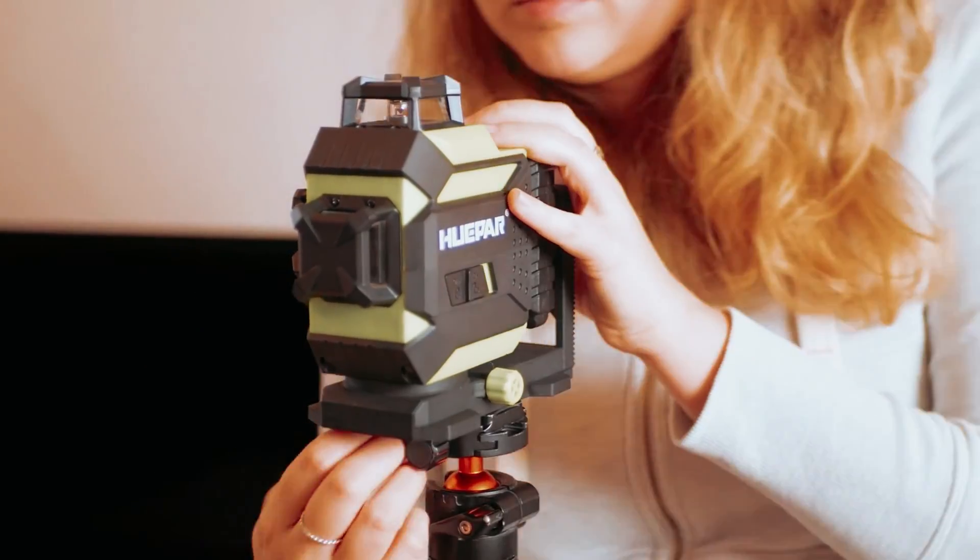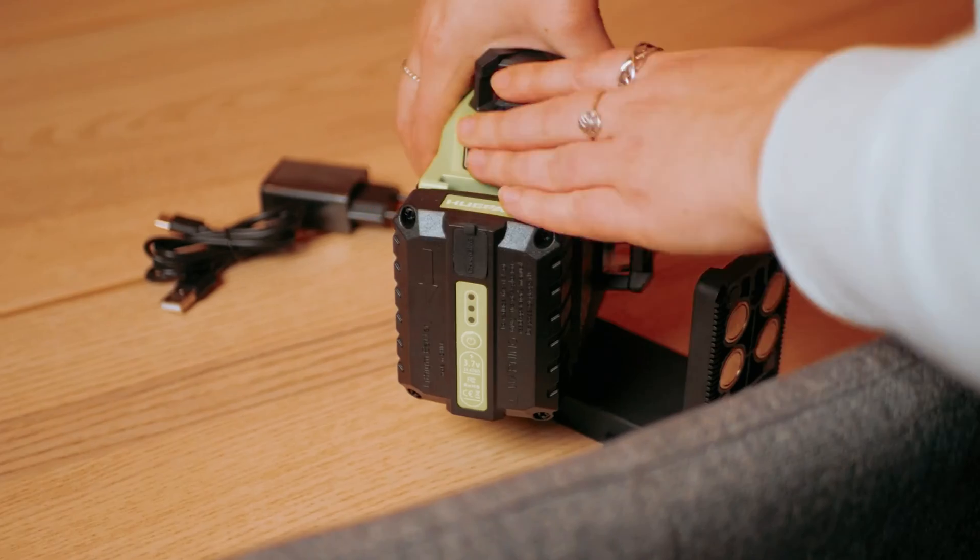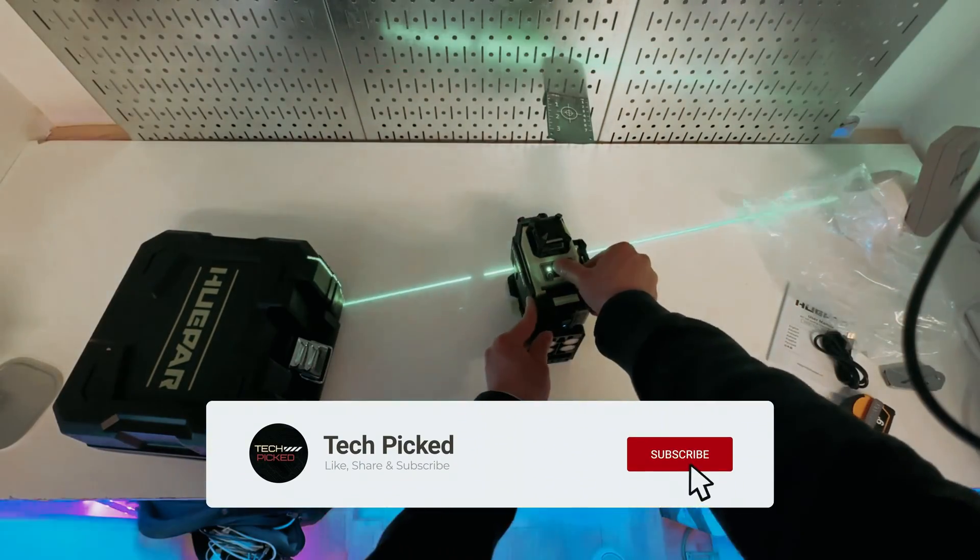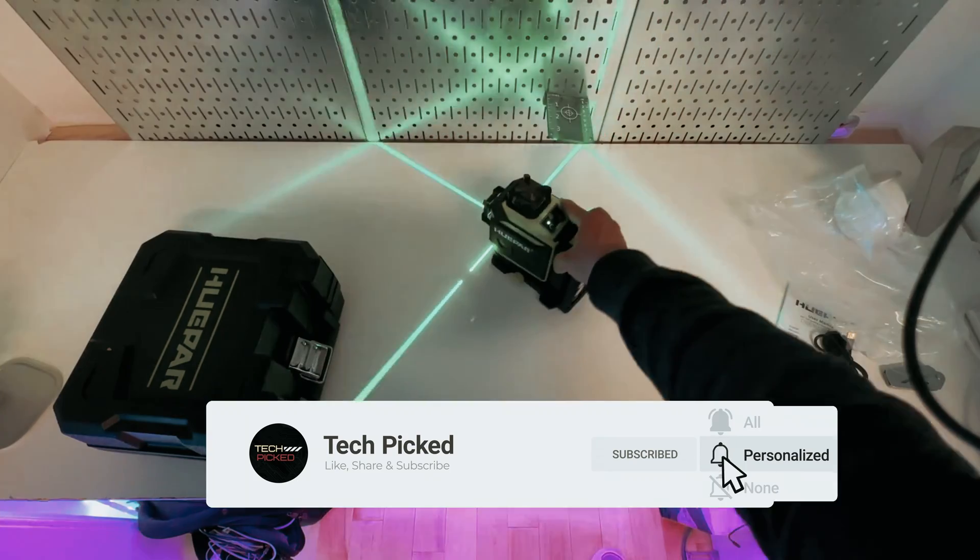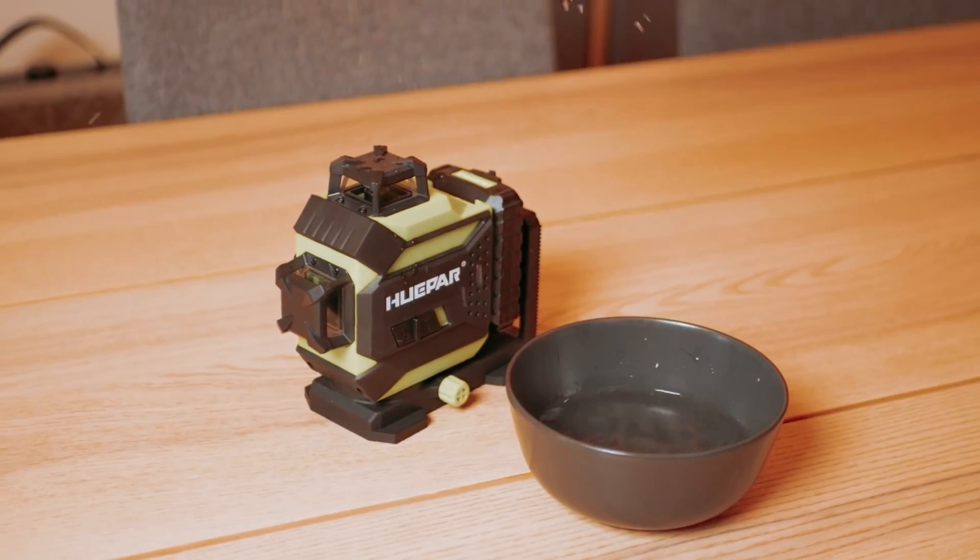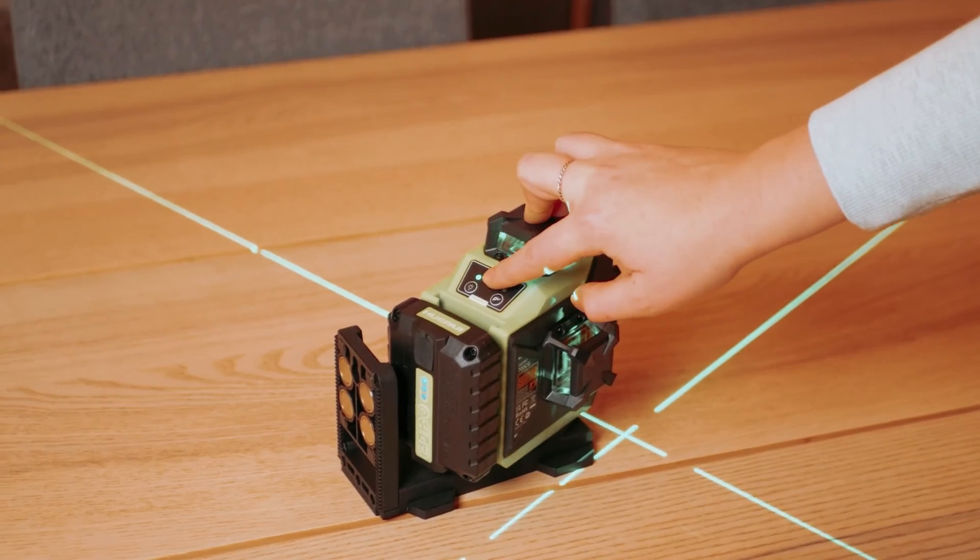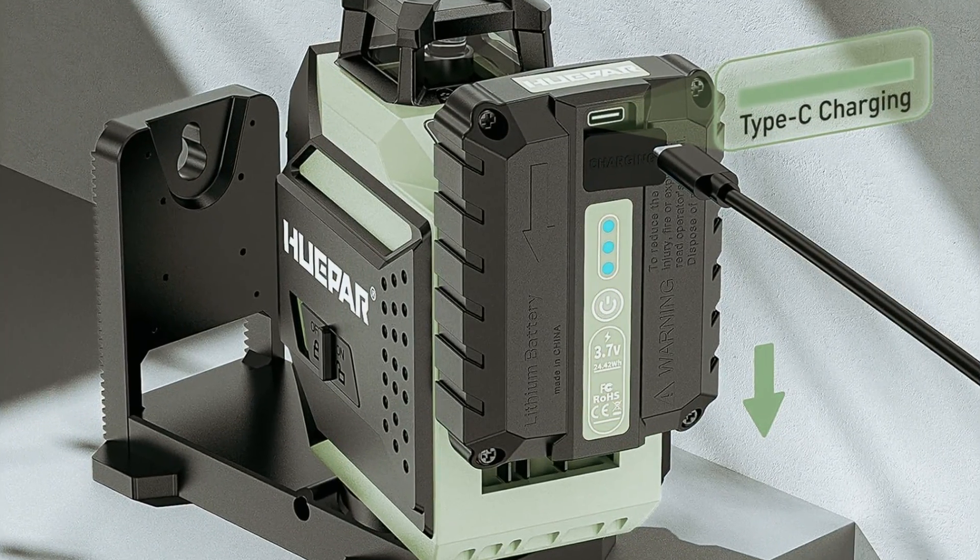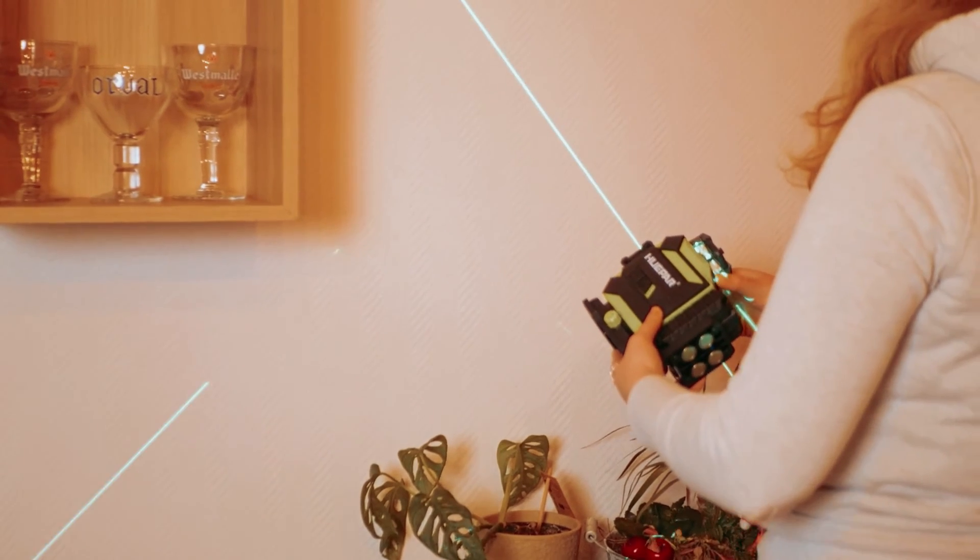The green laser beam is also up to four times brighter than red beams, making it highly visible in bright sunlight or over long distances of up to 197 feet. The 703CG Laser Level by HUEPAR is easy to use, with an automatic mode that quickly self-levels the laser lines within a few seconds. This saves time and ensures accurate results on every job. The metal construction of the laser level is durable and built to withstand the rigors of the job site.